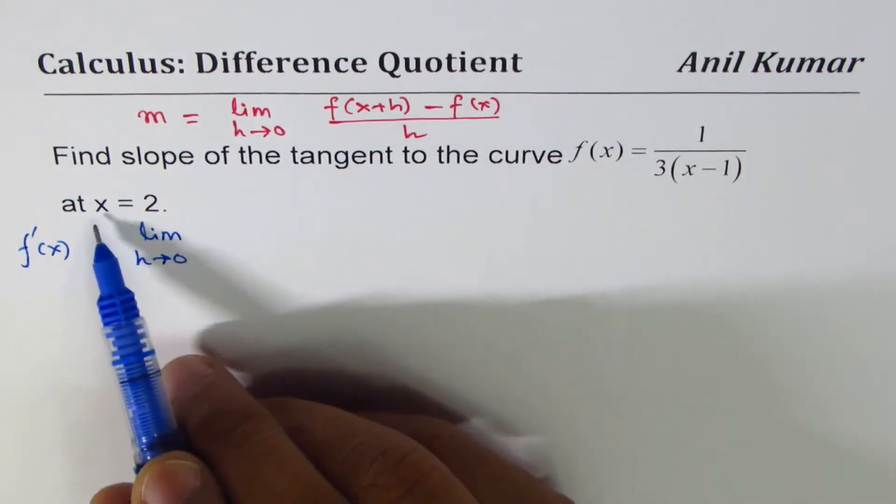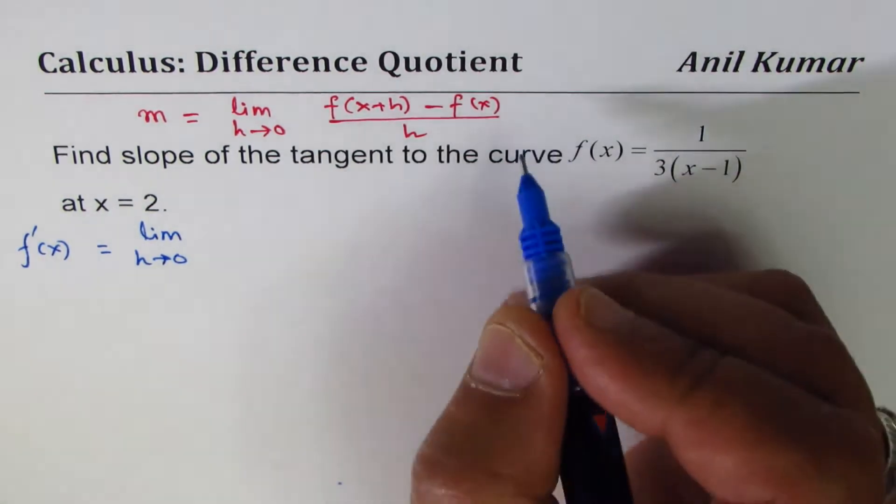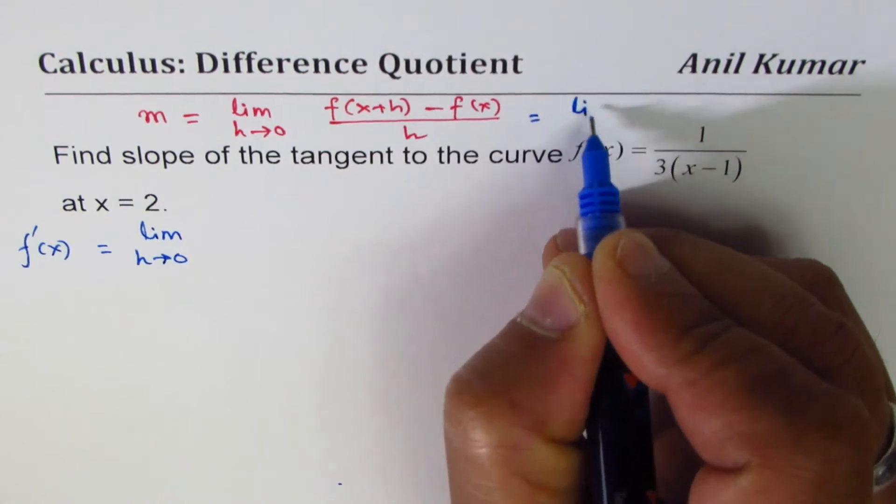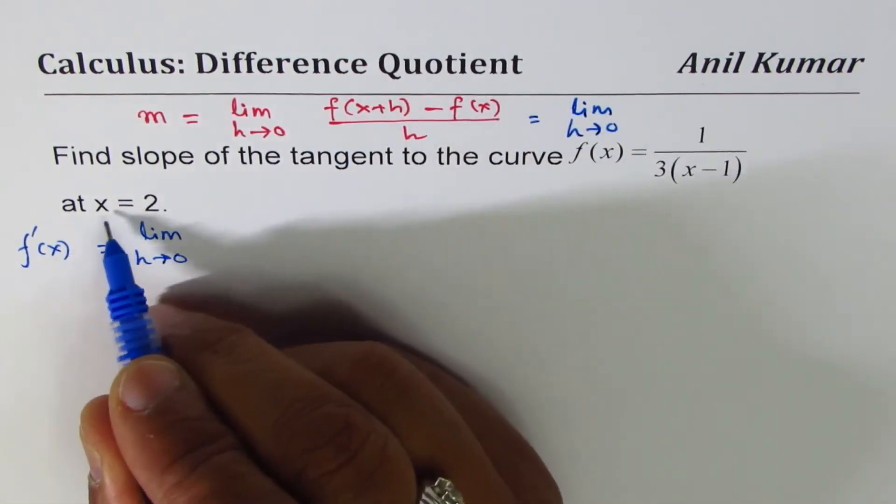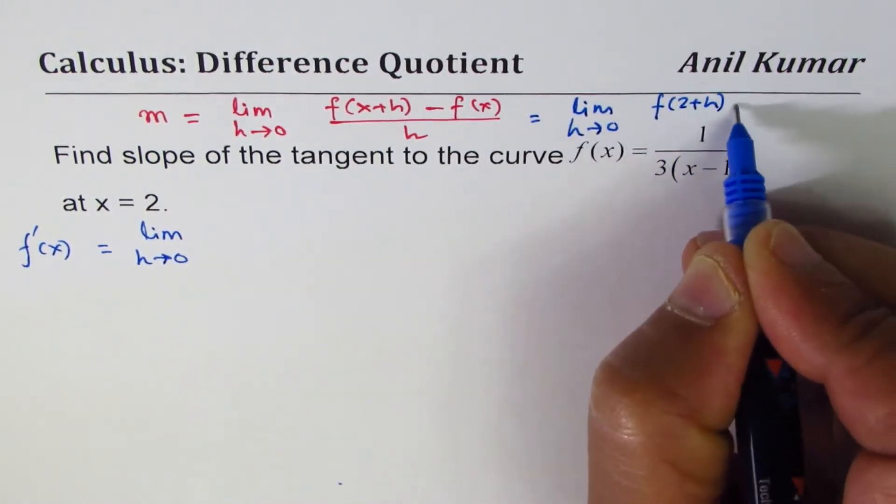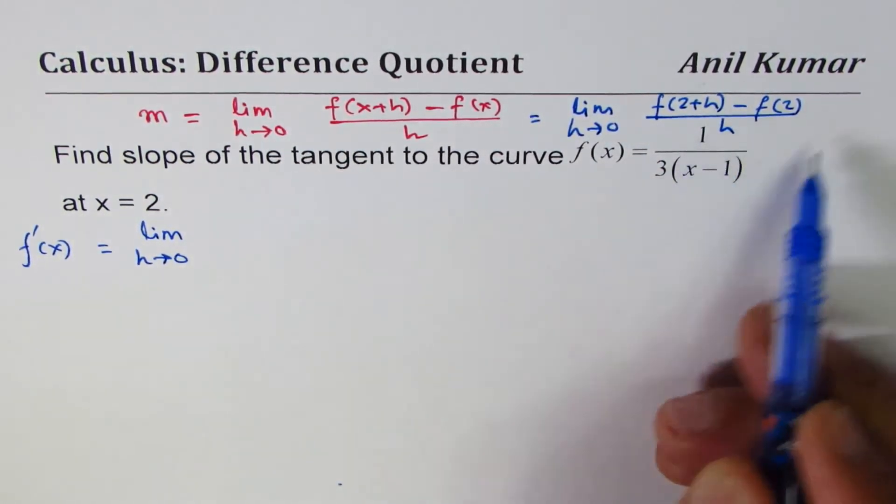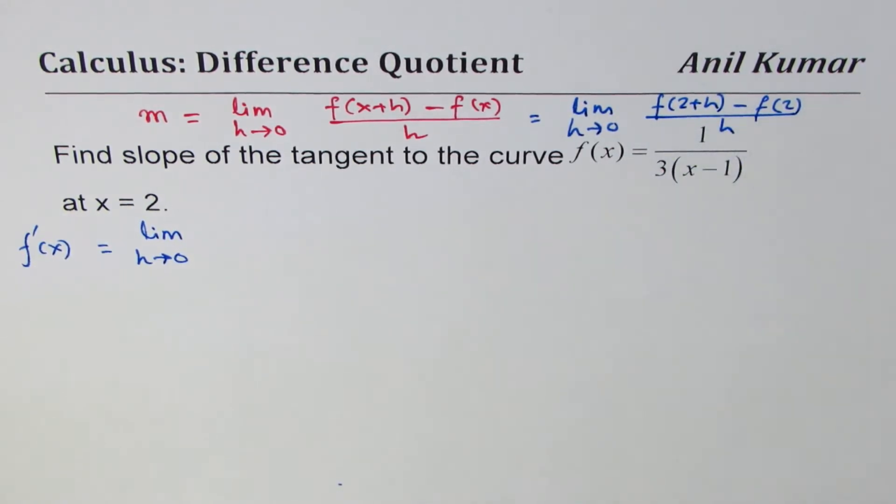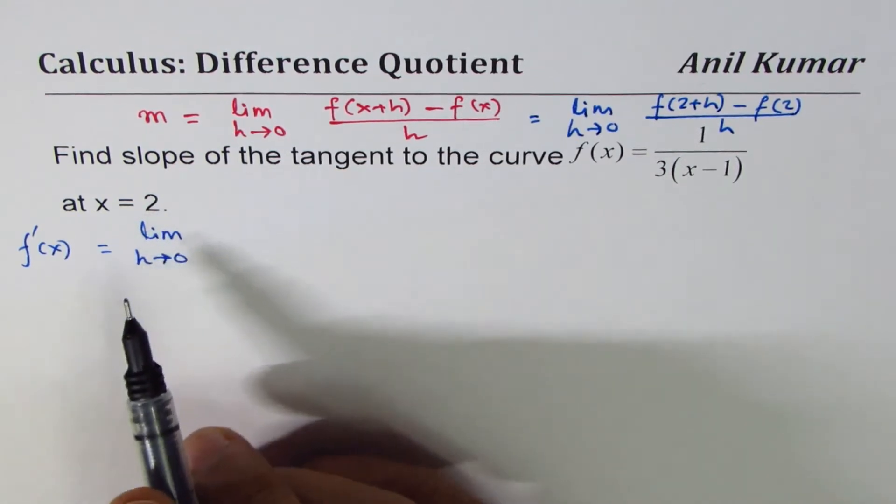Since we know the value of x, we can actually also use this equation as limit h approaches 0. Since we know x is 2, we could write this as f(2+h) minus f(2) over h. You could use this equation with the value of 2 itself, so it simplifies some calculations. You could do a general equation and substitute 2 later, that's your option.